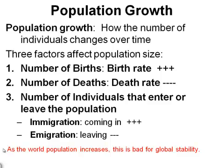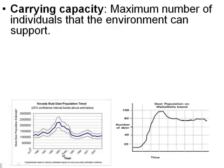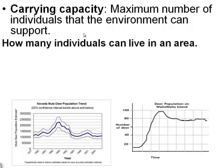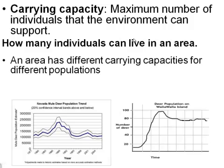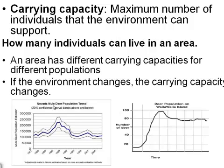As the world population increases, this is bad for global stability. All of our different levels, from population through the biosphere, have what we call a carrying capacity — the maximum number of individuals that the environment can support, or how many individuals can live in one area. An area has different carrying capacities for different populations, and if the environment changes, the carrying capacity changes.